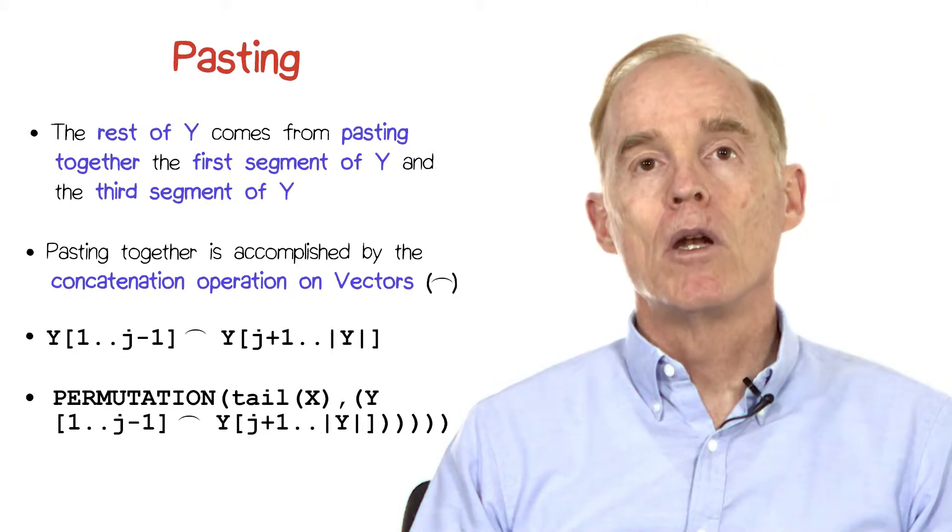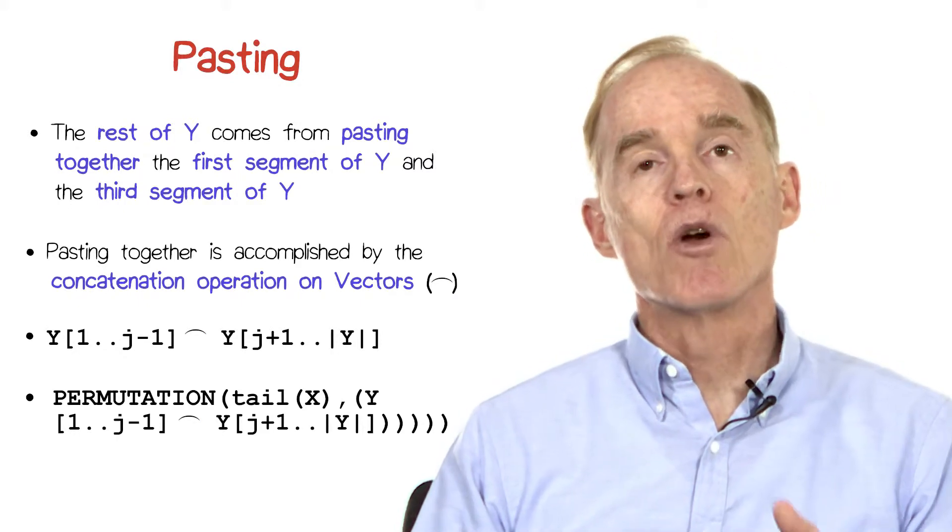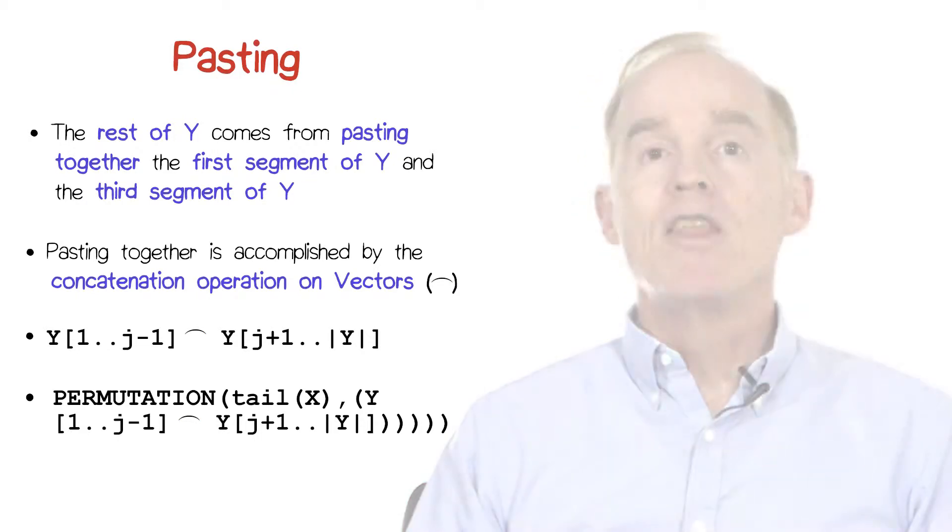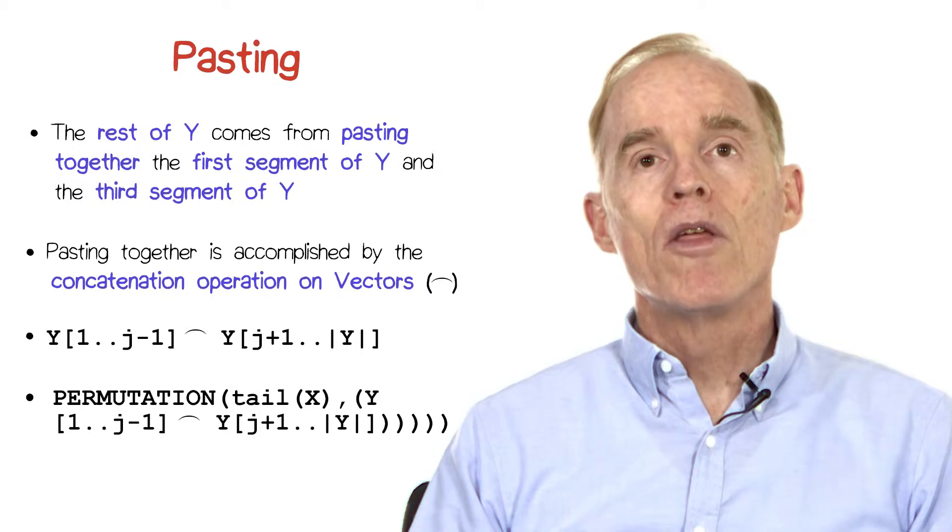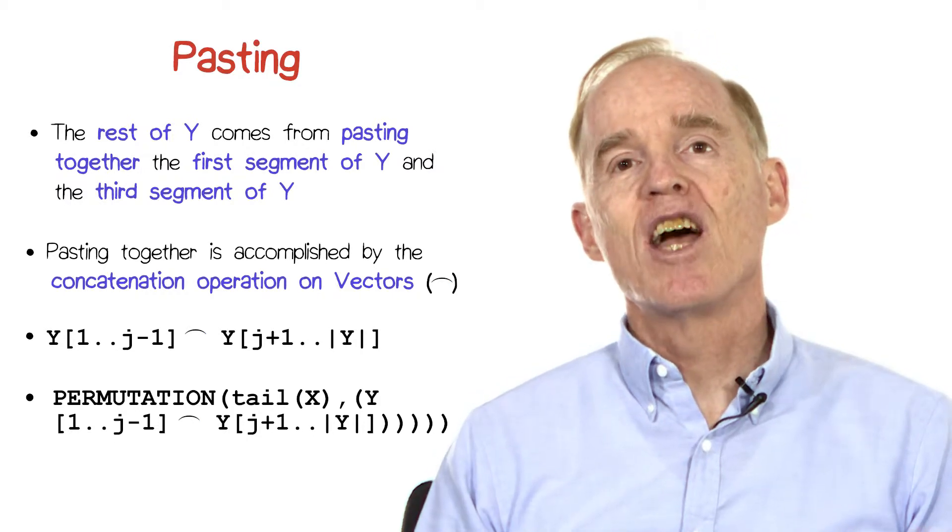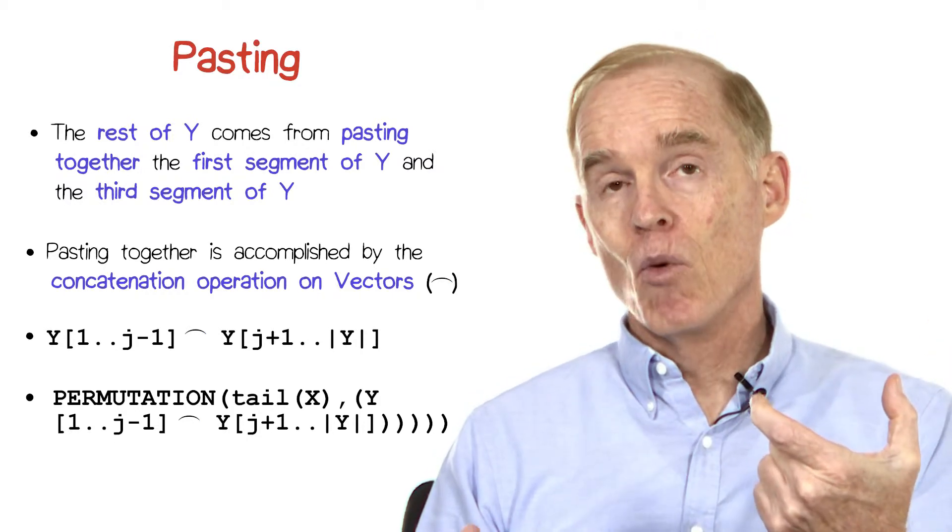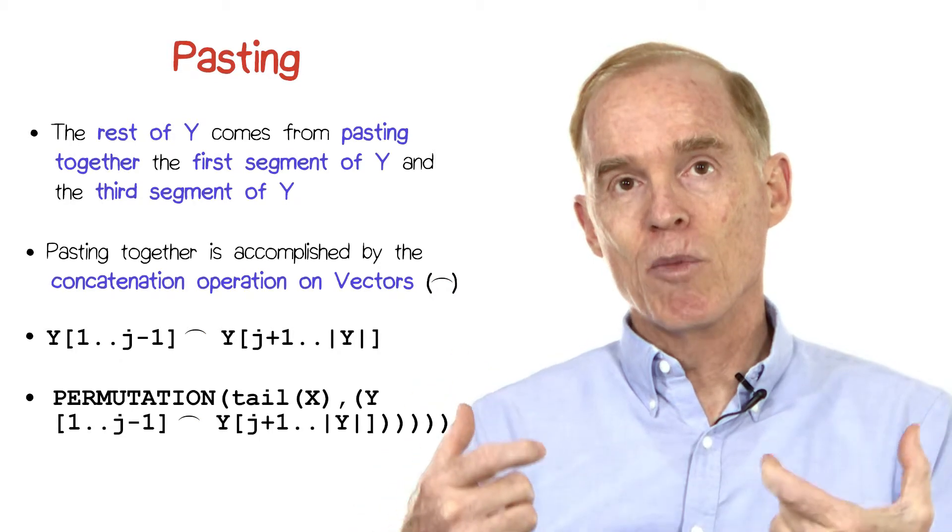First thing in our check is the tail of x. That is, we're going to leave off that first element. And then we want to compare that permutation-wise with the results of pasting together the first segment of y with the last segment of y.